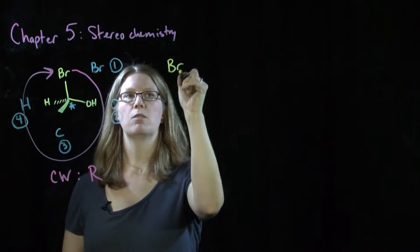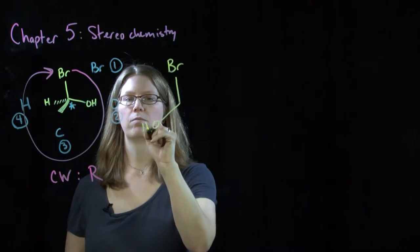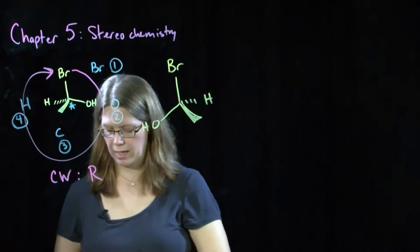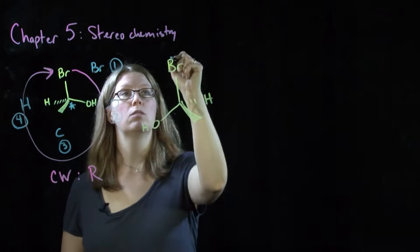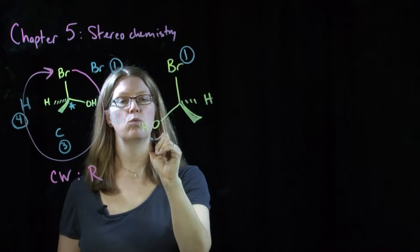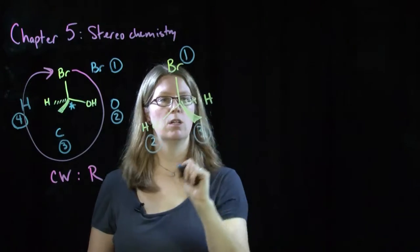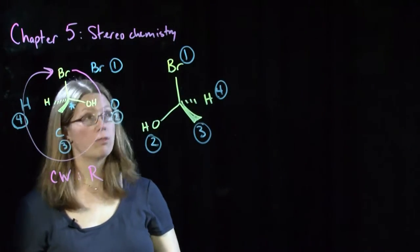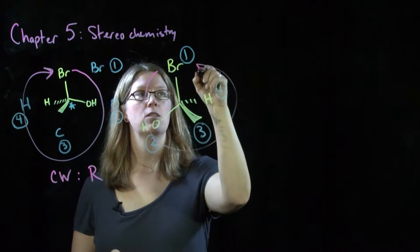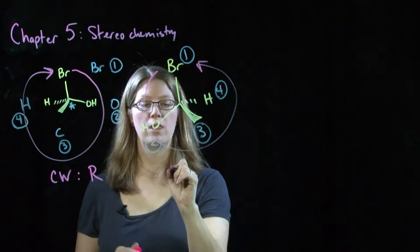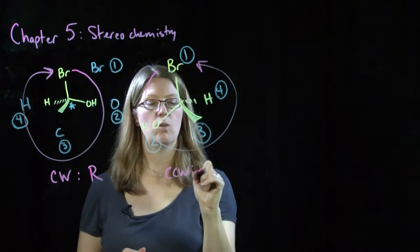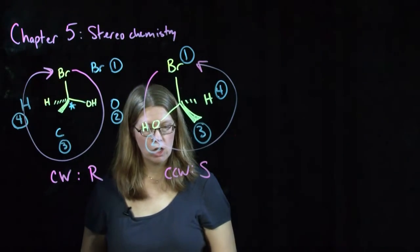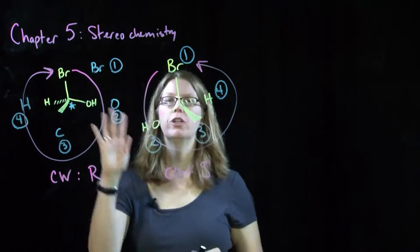When you connect in a clockwise fashion, this particular configuration is an R configuration — it stands for rectus. If we think about the mirror image of this molecule, hydrogen is still in the back, the same priorities still apply: bromine is one, hydroxyl group is two, that methyl carbon is three, hydrogen is four. With priority number four in the back, if we connect the dots we're now going counterclockwise, so we call this an S configuration.